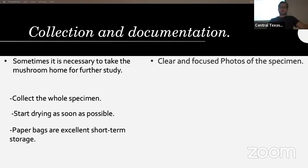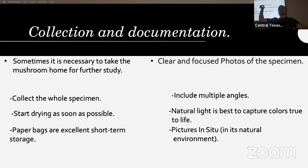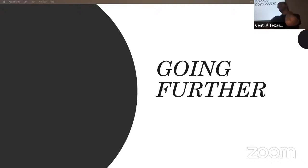You also want to take clear and focused pictures — multiple angles to see all features. Natural light is best as it captures colors as we would see them. I can't tell you how many times people post a picture taken under extremely yellow indoor lights asking what something is — I can't even tell what color it is. Take pictures outside, and in its natural environment in situ. I don't know any mushrooms on the red list that I've encountered here, but if concerned, check the red list website.